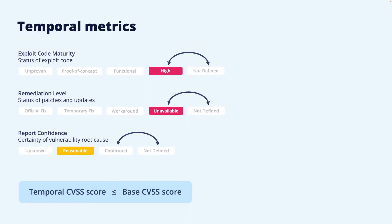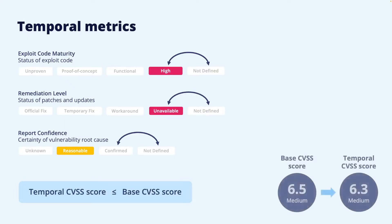Again, the chosen values are fed into a mathematical expression to give the resulting score. In this example, the report confidence is set to reasonable, and as a result the score is lowered from the previous 6.5 to 6.3. The fact that the exploit code maturity is high and the remediation level is set to unavailable does not affect the score, since these worst cases are anyway assumed by the base CVSS score.